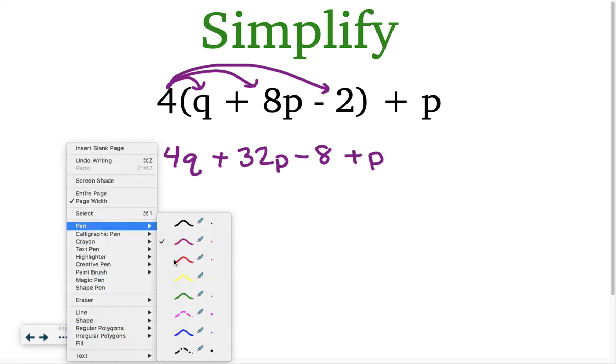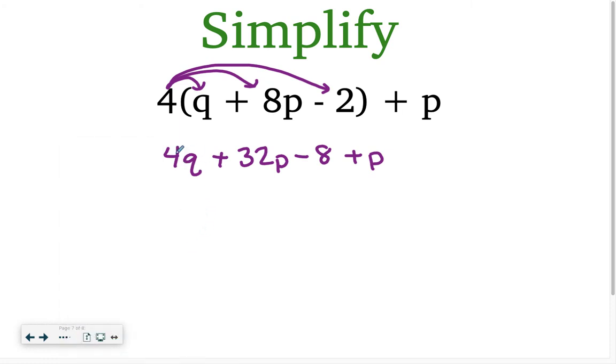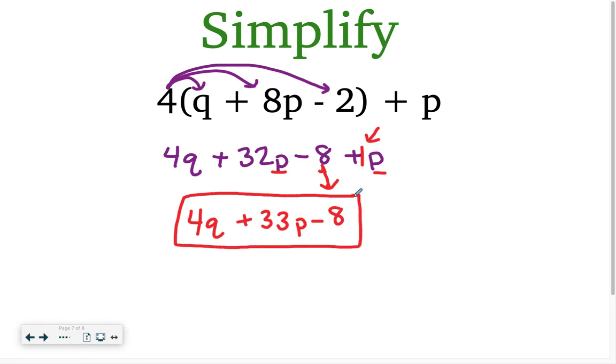Now I need to look for like terms that I can combine. So I only have one term with a q, so I'm going to just carry that down. Nothing's going to change there. But I see I have a p and a p. So 32p here plus 1p would give me 33p. Again, don't forget that 1. The number of times people forget that 1 is astounding. Then we have a minus 8. Sometimes once you've combined terms, it's easy to forget to carry that number down. So don't forget to do that. Make sure that you've taken care of every term that was listed. So my final answer is 4q plus 33p minus 8.